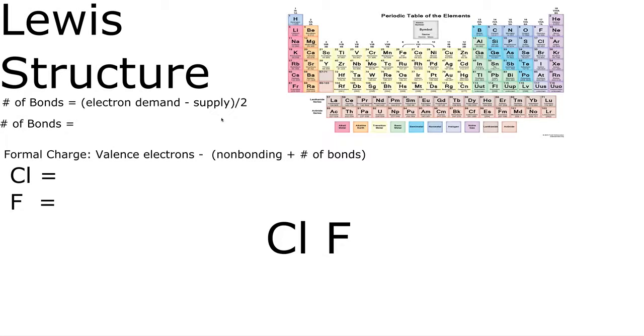We are going to make the Lewis structure for chlorine monofluoride. First, let's figure out how many electrons we have total. By looking at the periodic table, we can see that chlorine and fluorine both reside in group 7, so we have a total of 14 valence electrons.